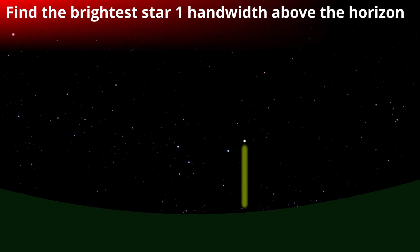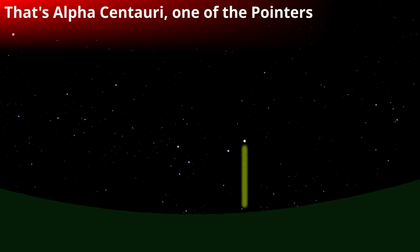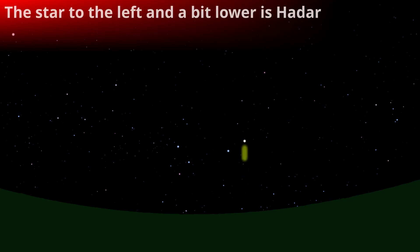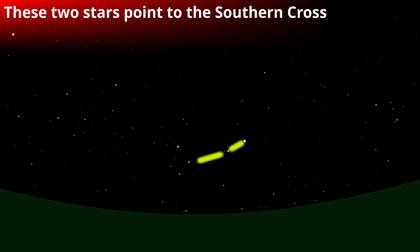And find the brightest star which is a hand width above the horizon. Depends how big your hand is of course. Well yeah, and that's one of the pointers, Alpha Centauri, our closest neighbor, and then the star to the left of it and a bit lower is Beta Centauri or Hadar. These two are the two pointers to the southern cross.